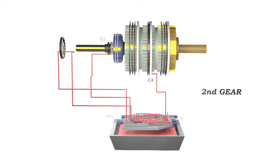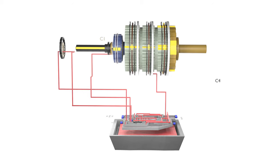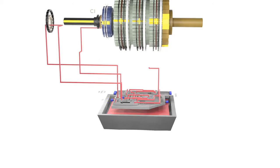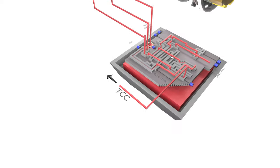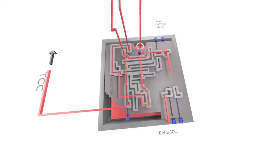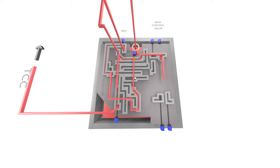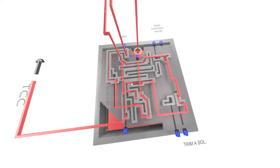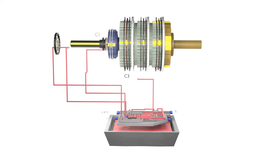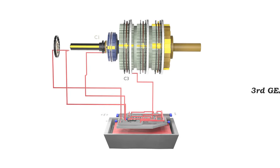For third gear we need to engage C1 and C3. C4 will disengage and exhaust out of the trim B solenoid valve. To engage C3, the main line will re-enter through trim A solenoid and shift valve 2. C1 and C3 are engaged — third gear.